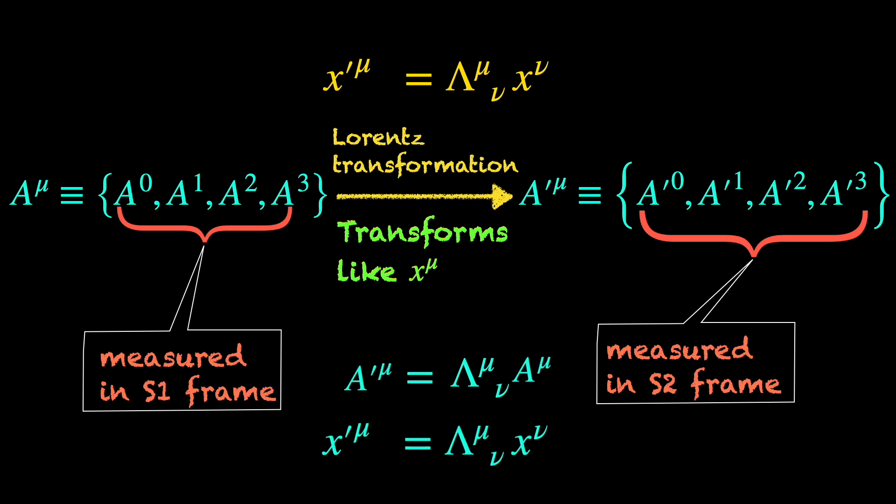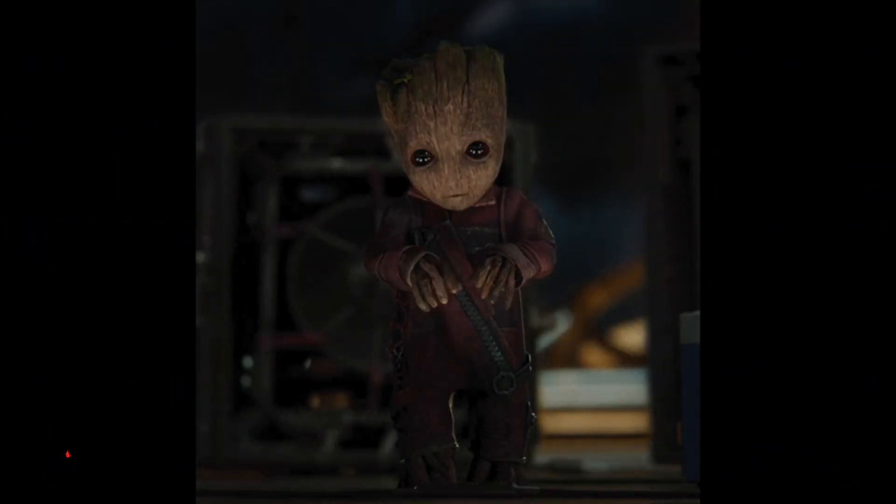Now, a random four-vector like a mu works fine for a formal definition but what we really need is some concrete examples. So, let's see. We talked about the event P and its space-time coordinates X mu in our S1 frame.